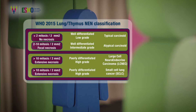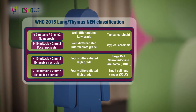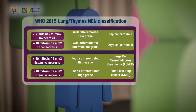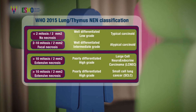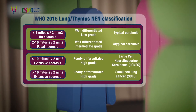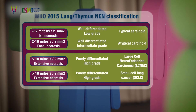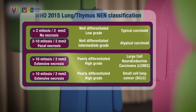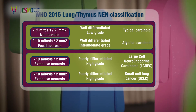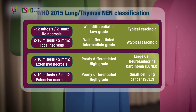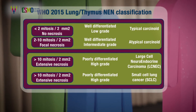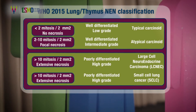These two parameters permit the pathologist to distinguish two main groups: one is the low-intermediate grade or well-differentiated, including typical and atypical carcinoids, and the other is the poorly differentiated or high-grade carcinomas, including large cell and small cell.